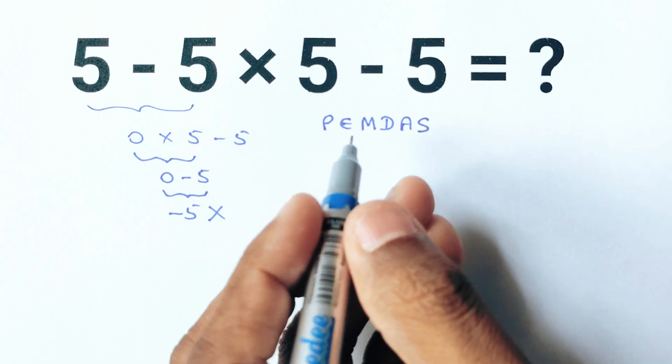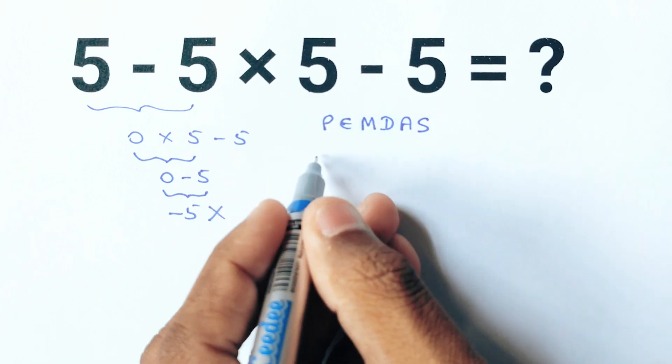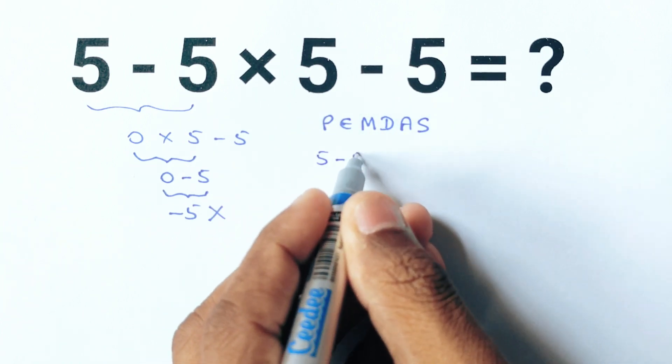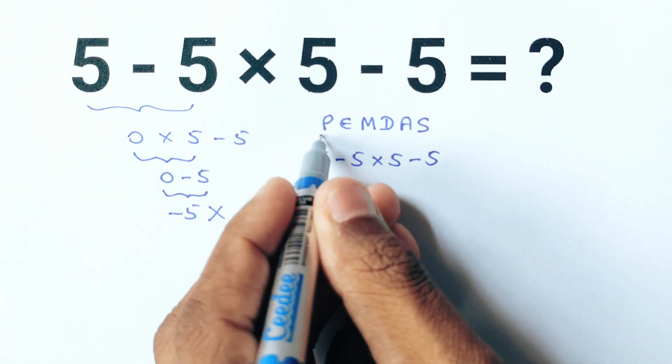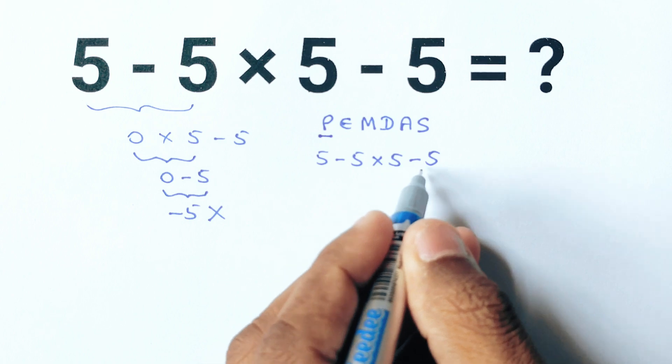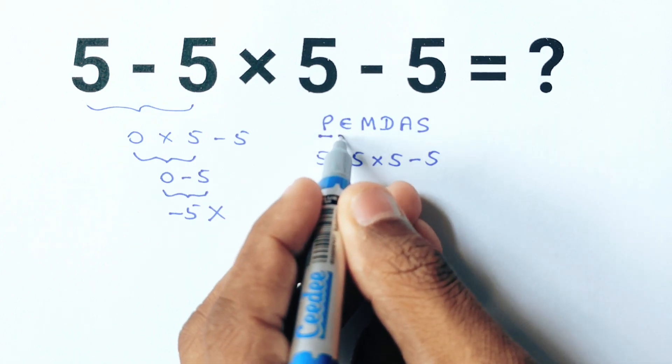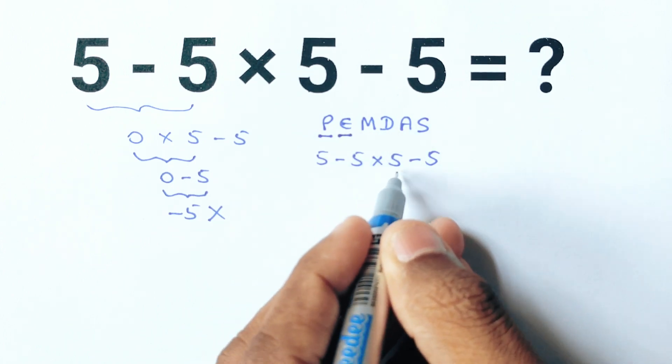Now let's apply PEMDAS to this expression: 5 minus 5 times 5 minus 5. We start by looking for parenthesis but there are none. Next we check for exponents and again there are none.